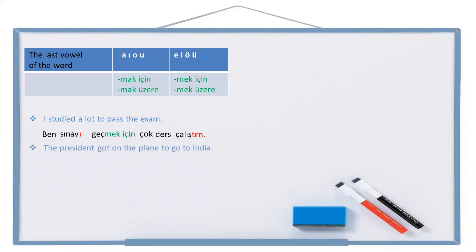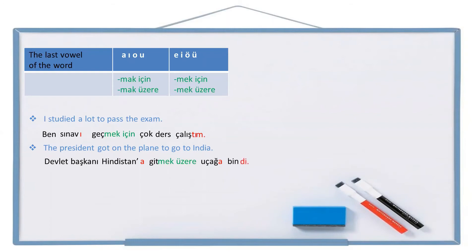Now let's take a look at this sentence: The president got on the plane to go to India. As you see, this is not daily speech — this is taken from TV news or a newspaper. So in this case, mak üzere is better. The president — devlet başkanı. India — Hindistan. To India — Hindistan'a. Go — git. To go — gitmek üzere. Plane — uçak. In Turkish, we say 'got on to the plane,' so: uçağa. Get on — bin. Got on — bindi. The president got on the plane to go to India: Devlet başkanı, Hindistan'a gitmek üzere uçağa bindi.